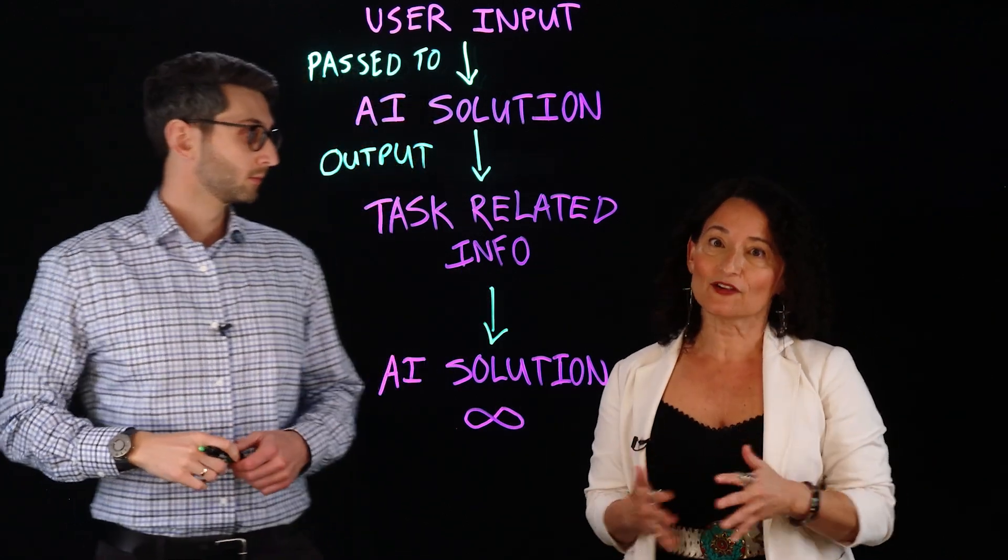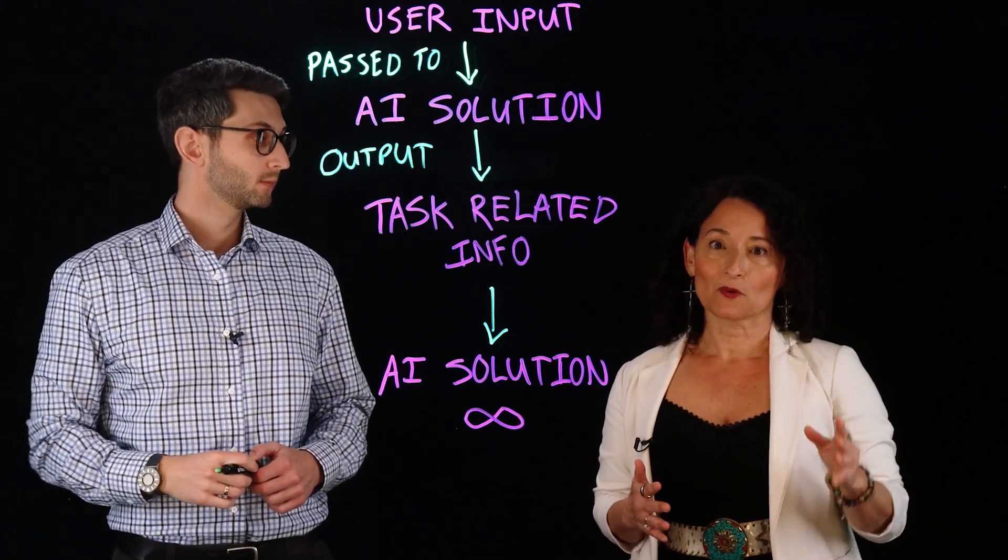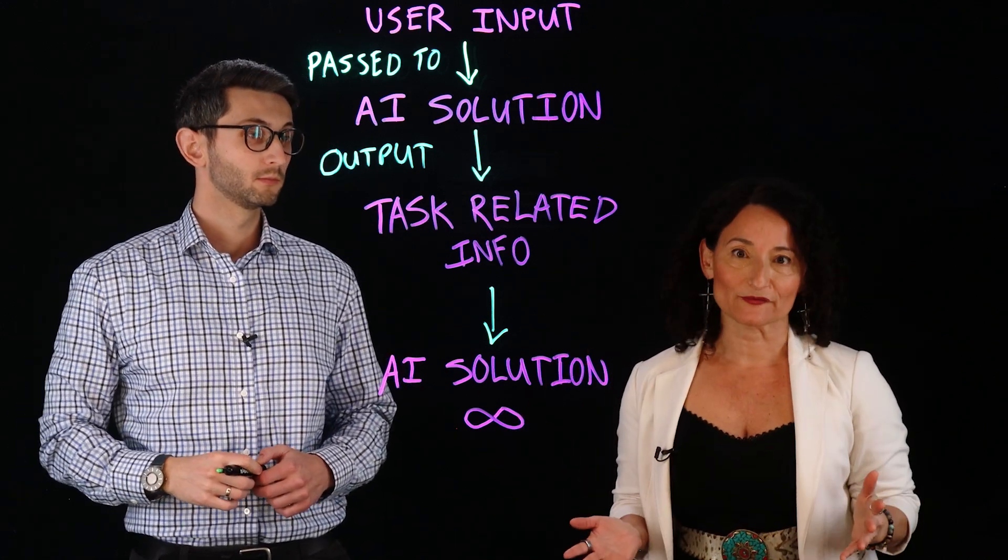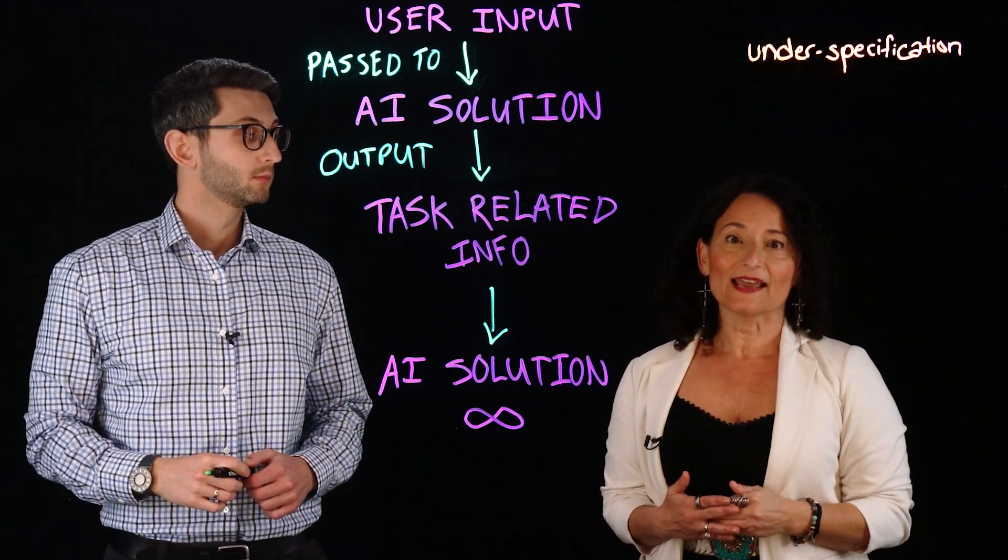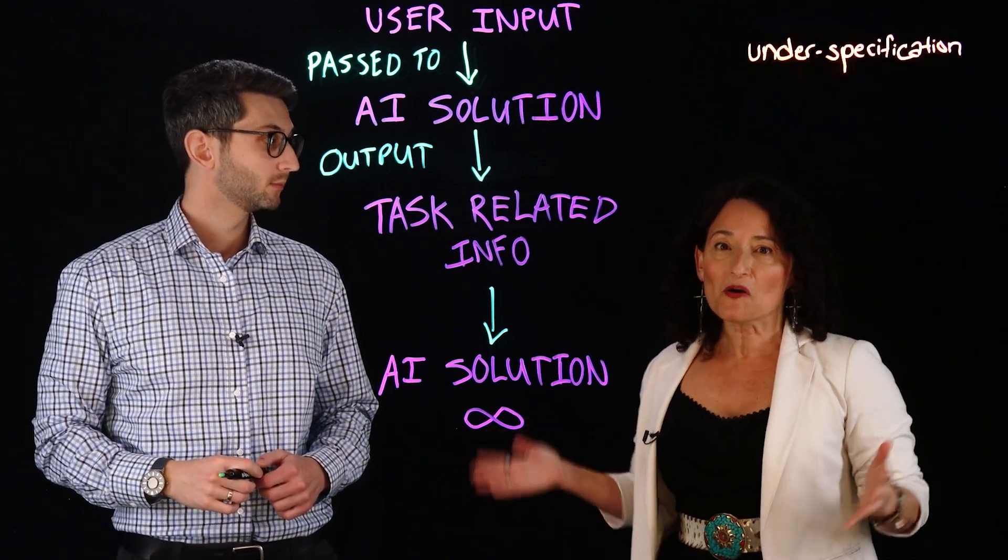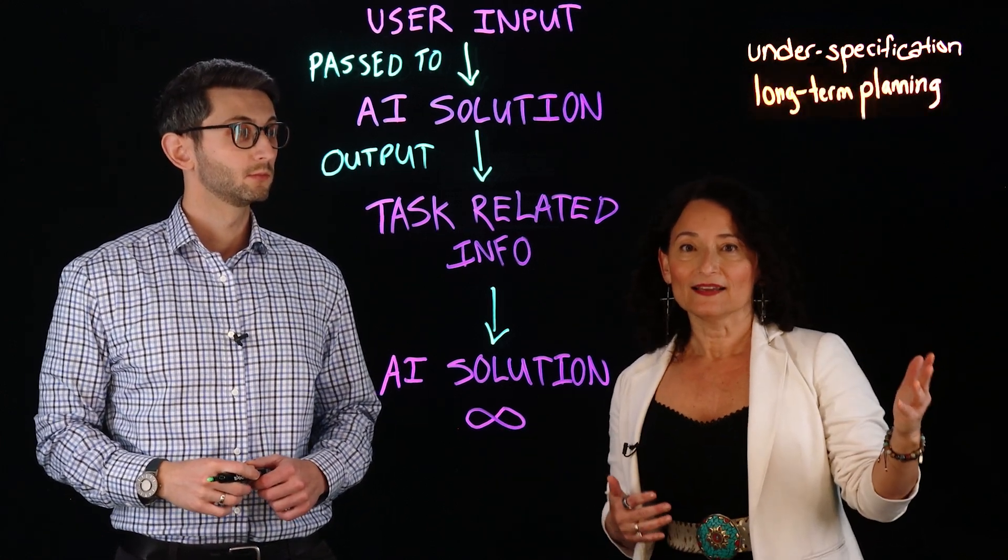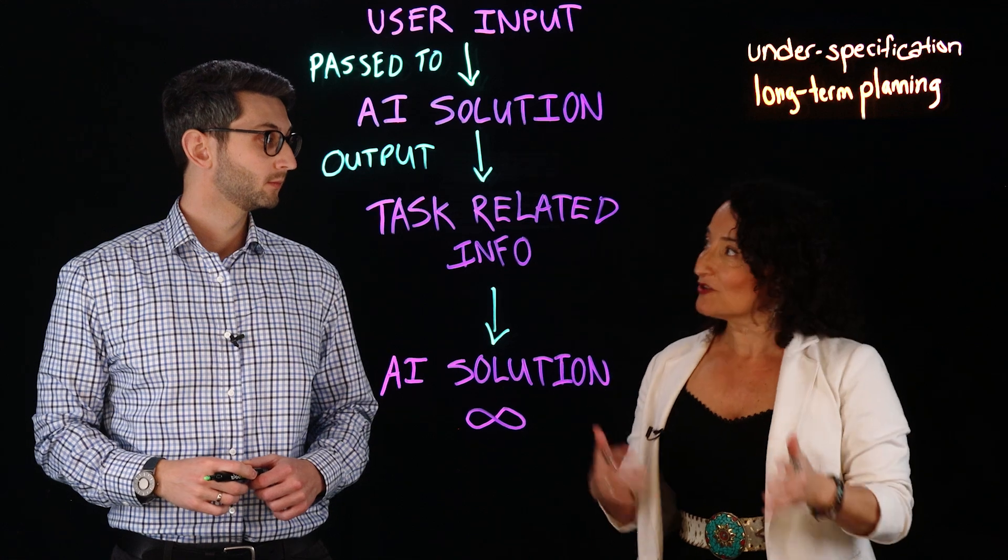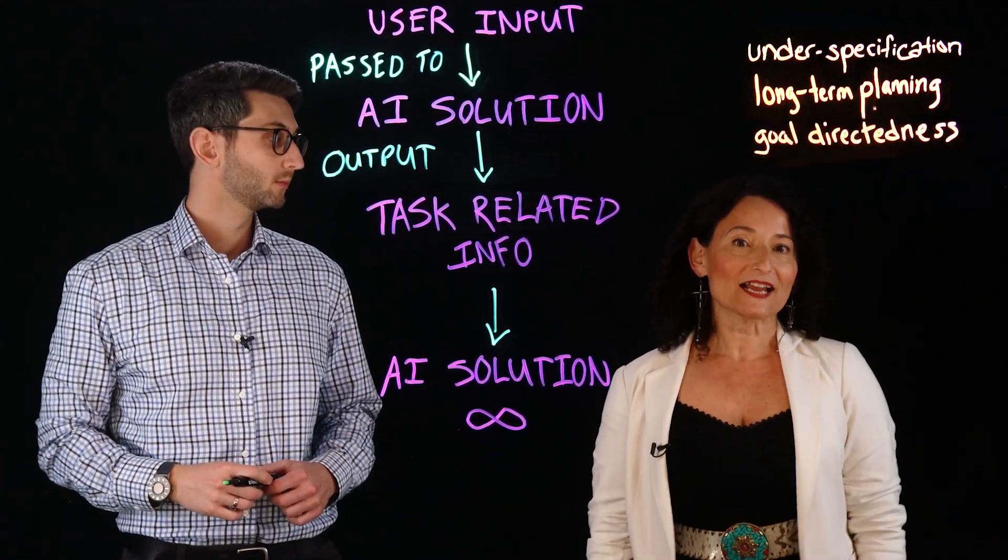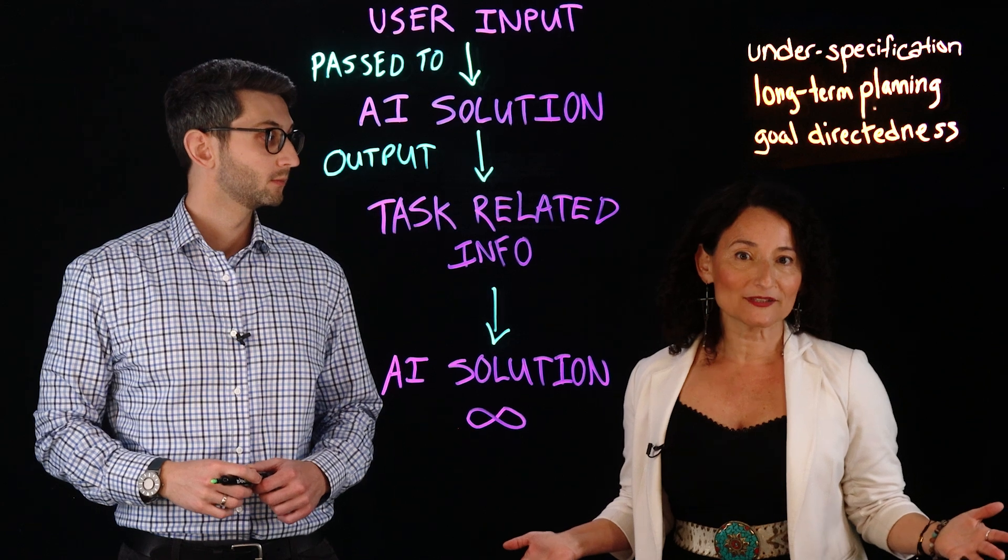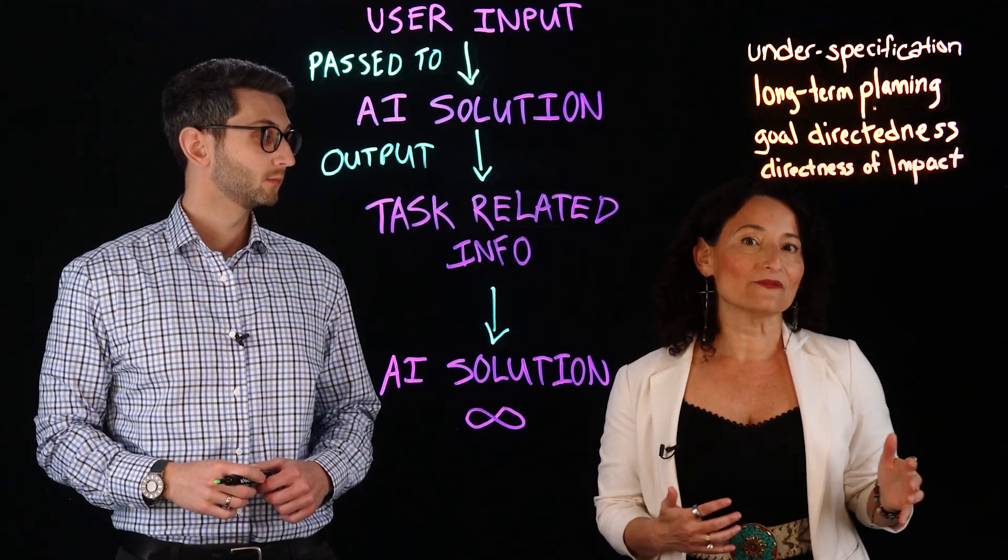There are four key characteristics, all that stem from autonomy, which amplifies various new forms of risk. First, there's underspecification. The AI is given a broad goal, but no explicit instructions on how to actually achieve it. Long-term planning. These models make decisions that build on the previous ones. Goal directedness. Instead of simply responding to the inputs, they work towards a goal. And then there's directedness of impact.